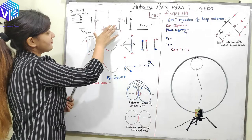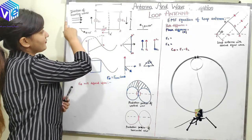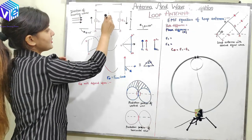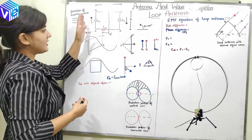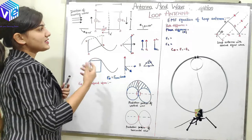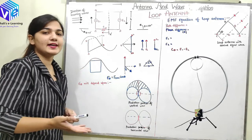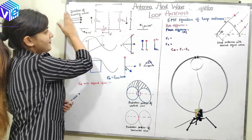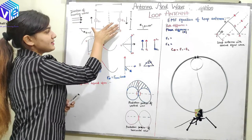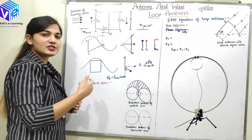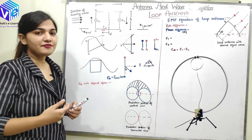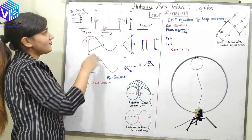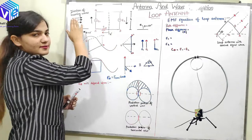We have two cases. The first case is when the loop antenna is in the perpendicular direction of the incoming wave. The second case is when my loop antenna is in the direction of the incoming wave. We will see these two extremes, and according to these two extremes we can find out how the induced EMF varies with respect to the direction of the incoming wave and the position of the loop antenna with respect to that incoming wave.